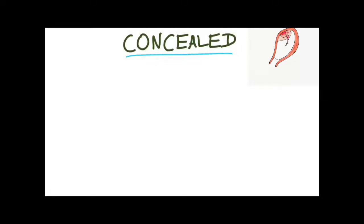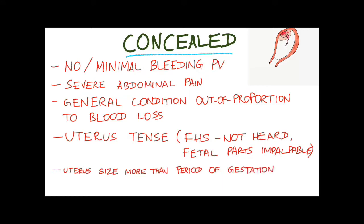In concealed type of abruptio placenta, there will be no or minimal bleeding per vaginum. There will be severe abdominal pain due to blood accumulation inside the uterus, and the general condition is out of proportion to the blood loss. The patient may go into hypovolemic shock. The uterus is often tense, fetal heart sound is not heard, fetal parts are difficult to palpate, and uterine size is more than the period of gestation due to excess blood accumulating inside.